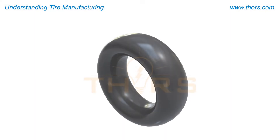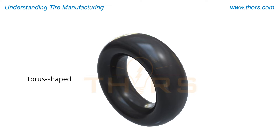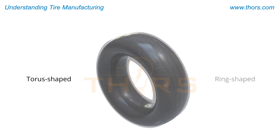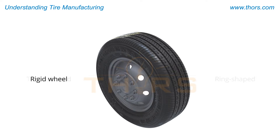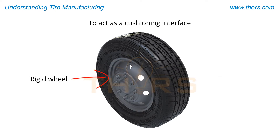At its most basic, a tire is typically a torus-shaped or ring-shaped device that is fitted onto a rigid wheel to act as a cushioning interface between the vehicle and the surface on which the vehicle travels.